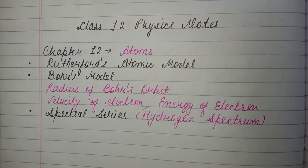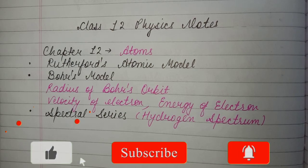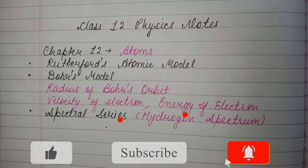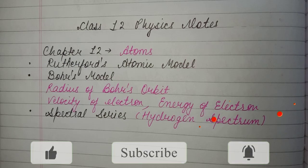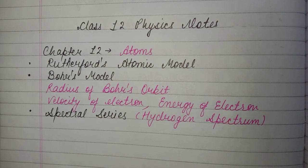After that the atomic model is important, including the radius from the orbit — the final formula from the derivation — then velocity of electron derivation, and energy of electron. These three derivations are important. After that, the most important topic is spectral series, which is hydrogen spectrum: what forms and what series forms. The diagram is also very important.